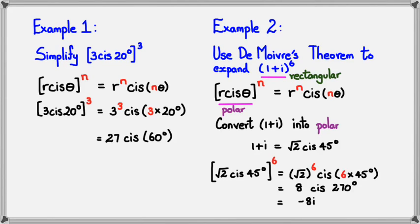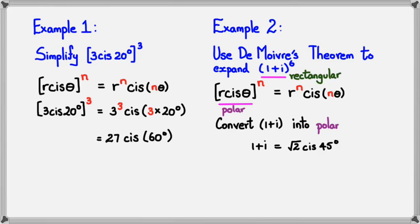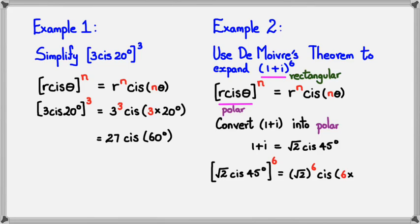Converting 1 + i into polar form gives us √2 cis 45°. If you're not sure how to do this, go back a few videos in this playlist to see how to convert from rectangular form to polar form. So (1 + i)^6 becomes (√2 cis 45°)^6. Applying De Moivre's Theorem, this equals √2 to the power of 6, cis (6 × 45°).